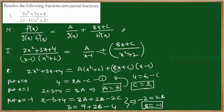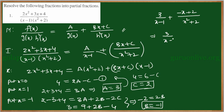We now have all three constant values: A equals 3, B equals minus 1, C equals 2. So we can write the partial fraction as: 3 over (x minus 1) plus (minus x plus 2) over (x squared plus 2), which equals 3 over (x minus 1) plus (2 minus x) over (x squared plus 2).